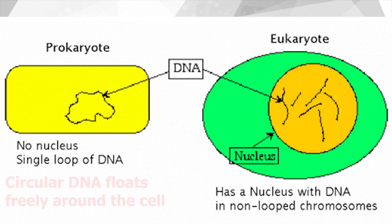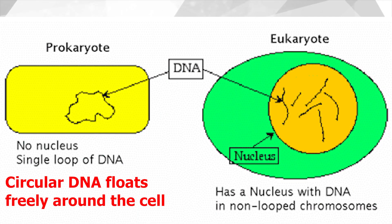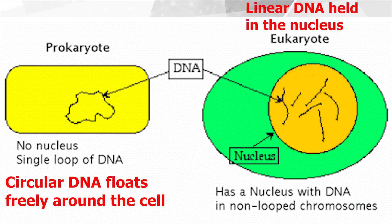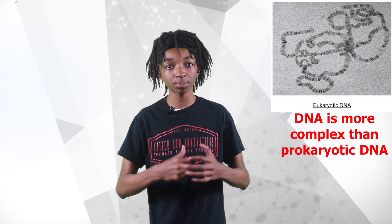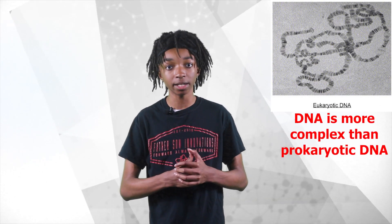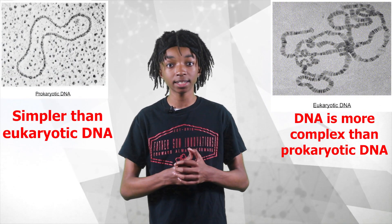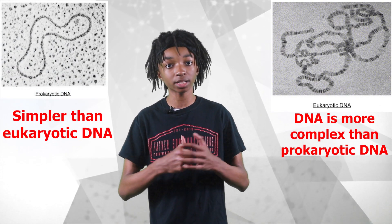Second, prokaryotes have circular DNA that floats freely around the cell, while eukaryotes have linear DNA that is held in the nucleus. Third, eukaryotes' DNA is more complex than prokaryotes' DNA — prokaryotes' DNA is simpler in comparison.